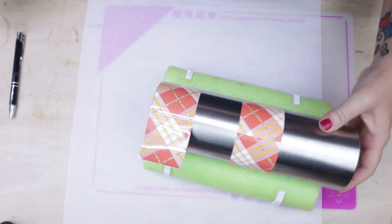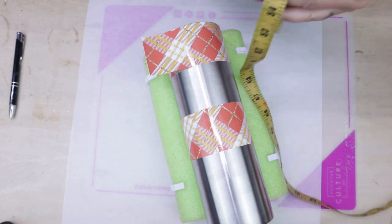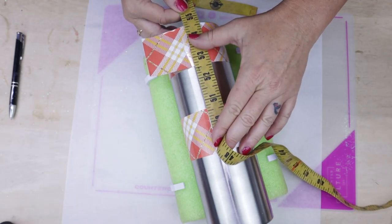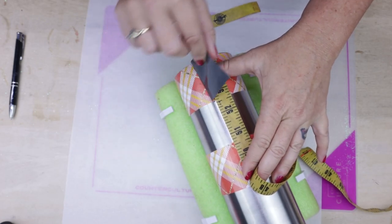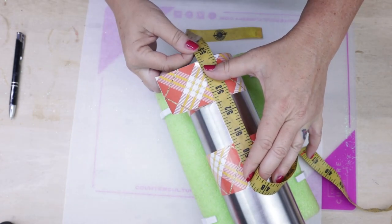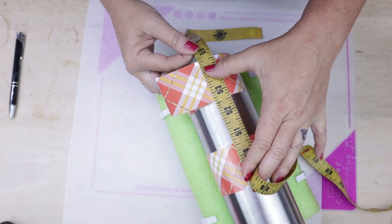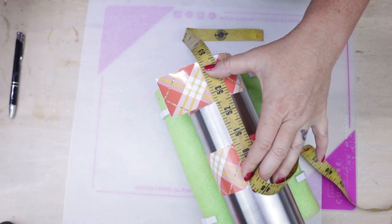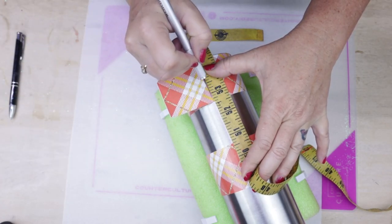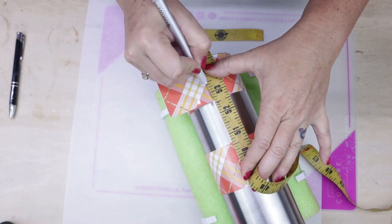Once we are happy that everything is nice and lined up, I'm gonna go ahead and use my measuring tape again as my guide to line up the bottom seam with the top seam. Once again, we're gonna take our craft knife and slice that right down the center and then remove the excess vinyl.